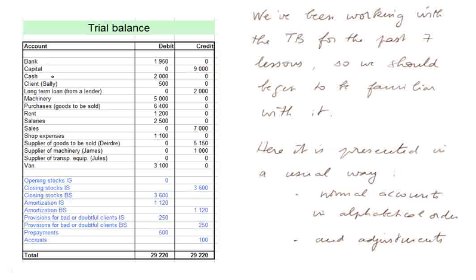I changed the names of the normal accounts to more formal names — instead of Deirdre, now it's 'supplier of goods to be sold'; instead of Sally, it's 'client'; instead of James, it's 'supplier of machinery', etc. And as I said, they are in alphabetical order — there is no meaning yet in the structure or order of this list.